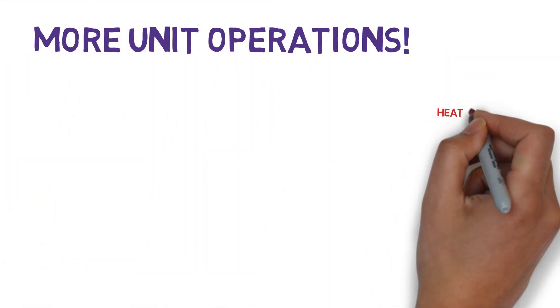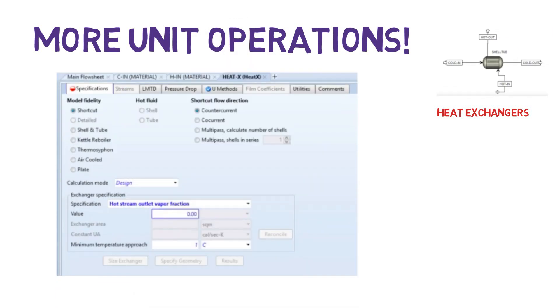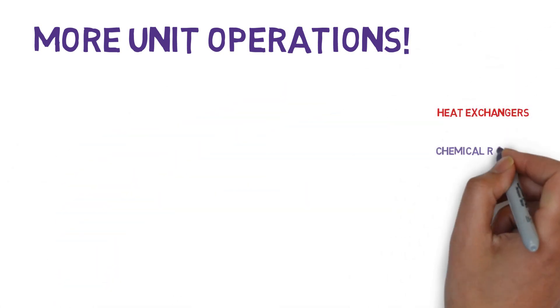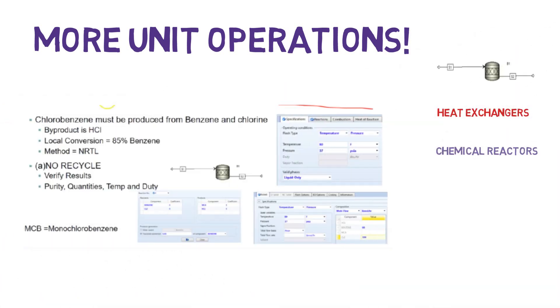We're going to cover more complex unit operations, such as heat exchangers, shortcut methods, and rigorous methods. Chemical reactors, such as the stoichiometry, equilibrium, and kinetic base reactors.